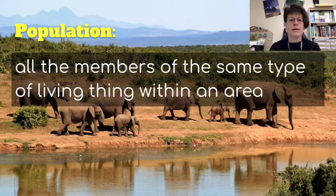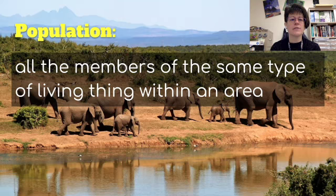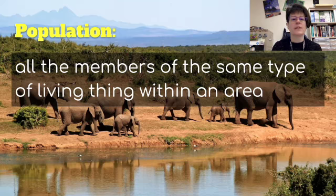So far, we have been talking about genetics on an individual level, how it affects the individual. Now, we're going to take a look at the genetics of large groups, and specifically focusing on populations. A population is all the members of the same type of living thing within an area.